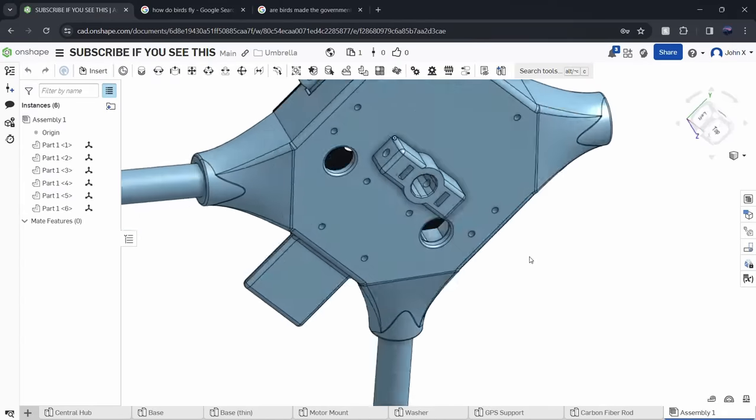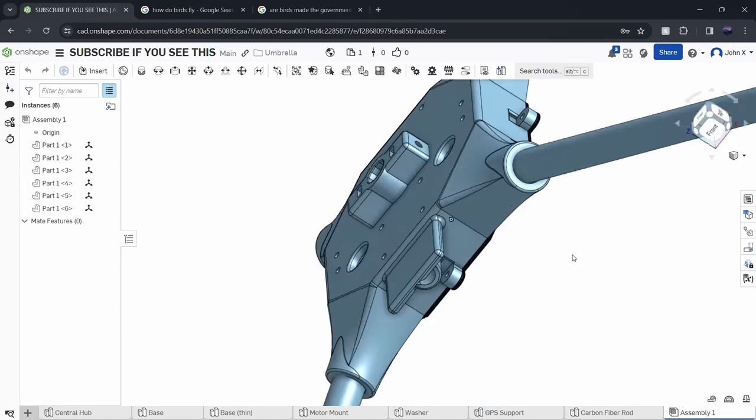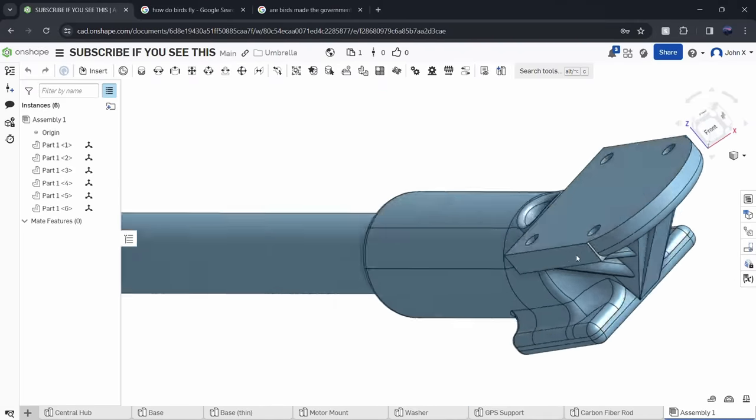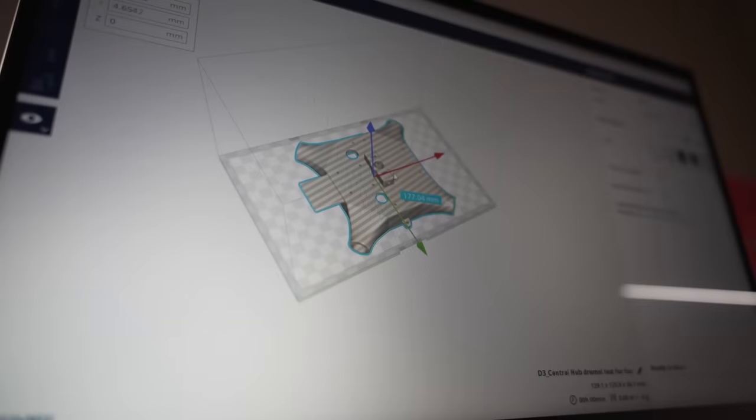So here's the design: a central hub with a hole for the umbrella and four angled connection points for the arms, as well as four of these parts that mount the motors onto the arms, and a few other parts as well. Now let's just have these parts 3D printed.